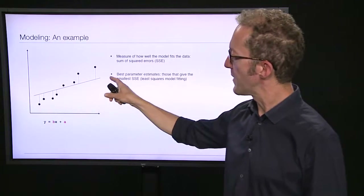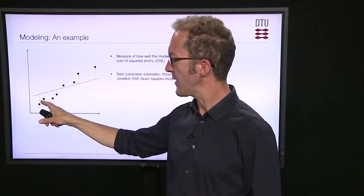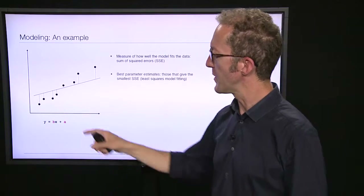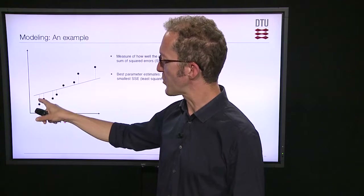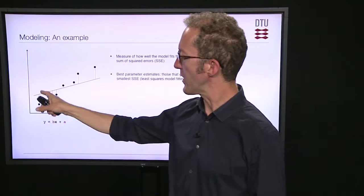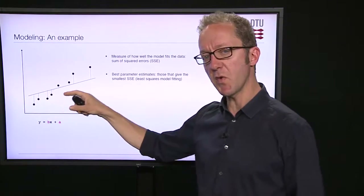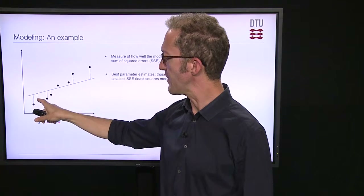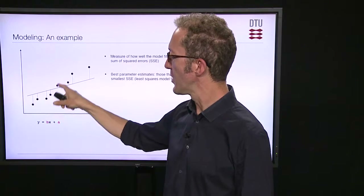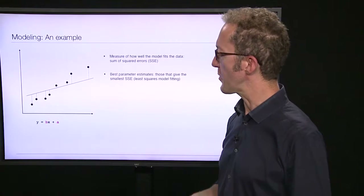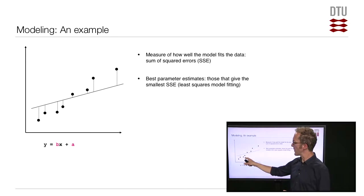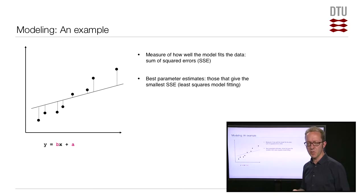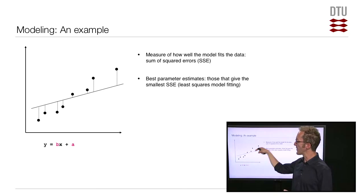The idea is quite simply that we take the y value of the model, represented by the line, and subtract the y value of each data point. For this particular x value, the line has some y value and the data point has another value; we subtract one from the other and square it, so we always get a positive number. We do the same for all remaining data points and sum up all these squared terms. This is a measure of how well our model fits the data. If the line goes through every single data point, the sum of squared errors will be zero. When that's not possible, the goal becomes to find the parameter values that minimize this sum of squared errors.